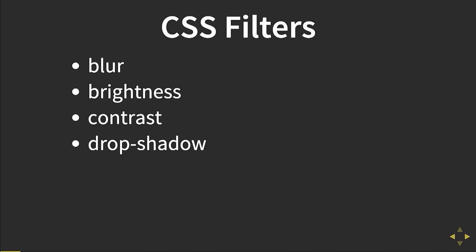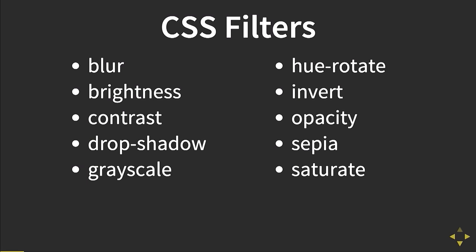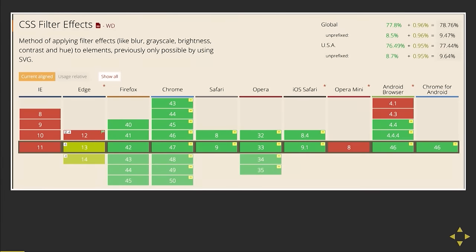So let's start with the filters themselves. There are 10 of them: blur, brightness, contrast, drop shadow, grayscale — make sure you spell grayscale with an A not an E because I make this mistake all the time — hue rotate, invert, opacity, sepia, and saturate. I'm not going to go over these in too much detail because they're pretty self-explanatory, but they're really powerful and the adoption of them is pretty wide so you can get started using them.